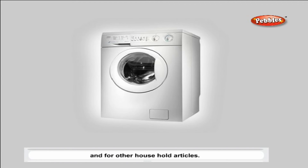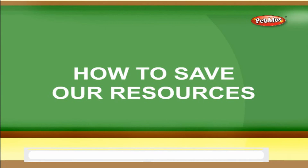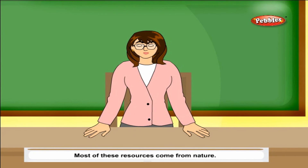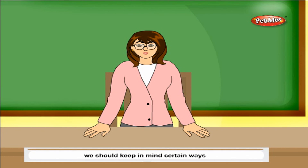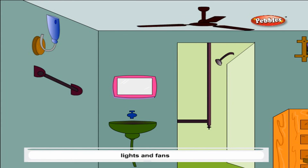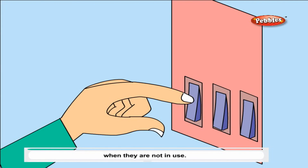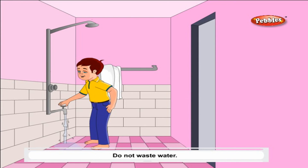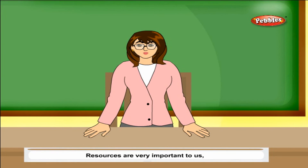Most of these resources come from nature. In order to save and protect these resources for future generations, we should keep certain things in mind. Turn off electrical appliances such as lights and fans when they are not in use. Do not use vehicles unnecessarily. Do not waste water. Resources are very important to us — we need to use them wisely.